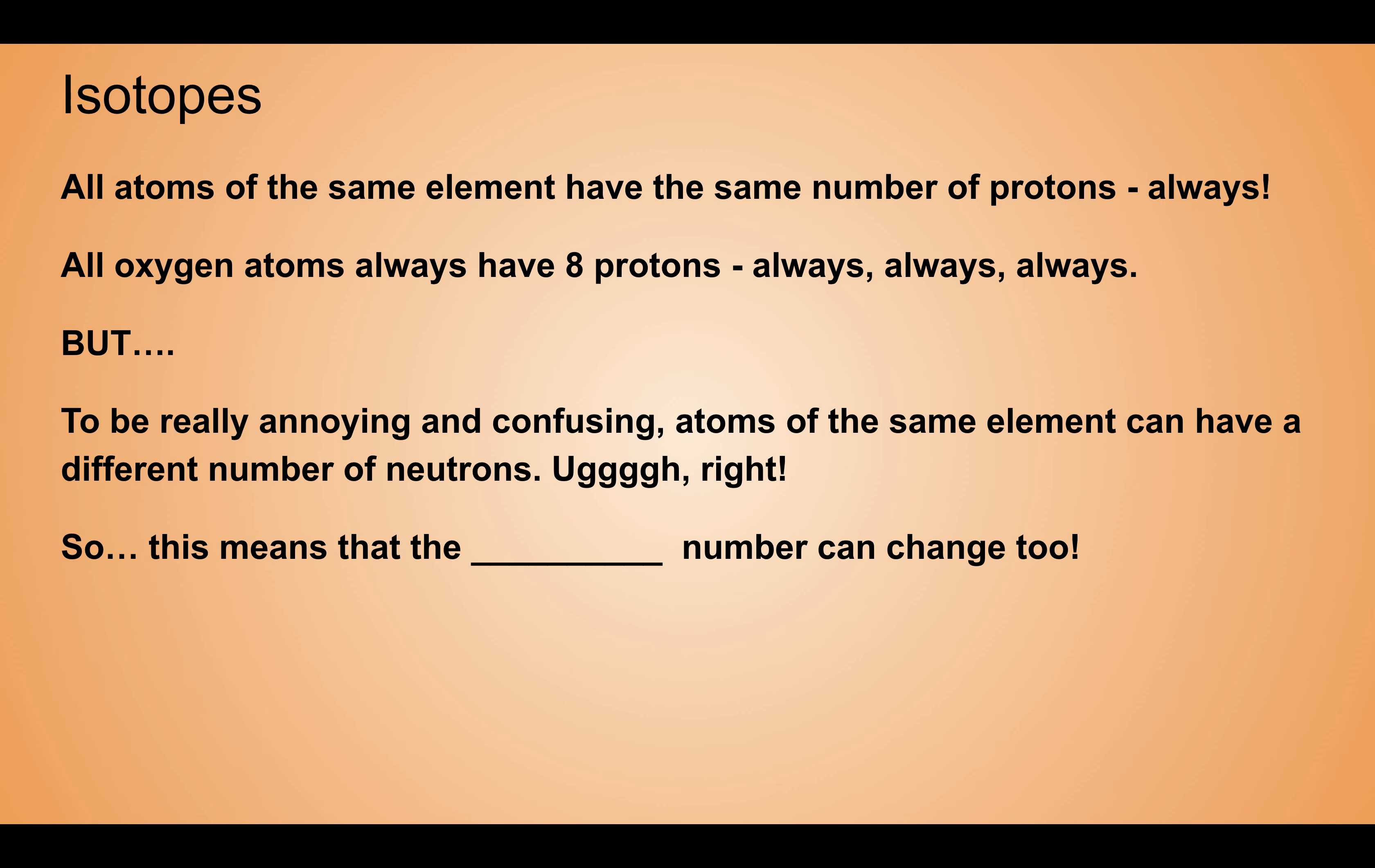Remember I told you they always have the same number of protons - always, always, always. All gold atoms always have the same number of protons, 79. All oxygen atoms always have eight protons. But to be really annoying and confusing, atoms can have a different number of neutrons. If they have a different number of neutrons, what is that going to change - the atomic number or the mass number?